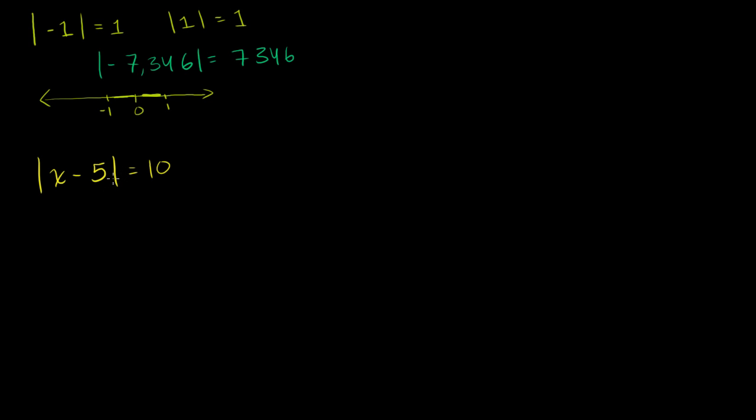This equation is going to be true in two situations. Either x minus 5 is equal to positive 10 — if this evaluates to positive 10, when you take the absolute value, you get positive 10. Or x minus 5 might evaluate to negative 10 — if x minus 5 evaluated to negative 10, when you take the absolute value, you would get 10 again. So x minus 5 could also be equal to negative 10. Both of these would satisfy this equation.